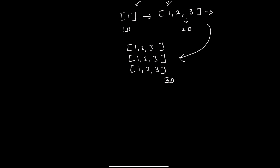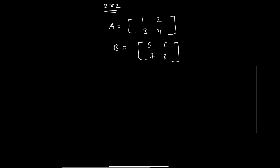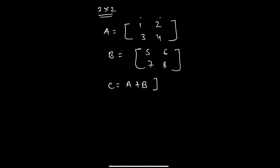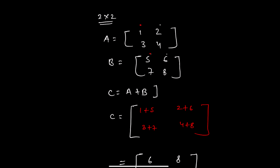Let's understand matrix addition. Say we have two 2x2 matrices: A equals [1, 2; 3, 4] and B equals [5, 6; 7, 8]. We will also look at this in Python. If we add A plus B, all the elements get added — this is known as an element-wise operation. So: 1+5, 2+6, 3+7, 4+8, giving the result 6, 8, 10, and 12.